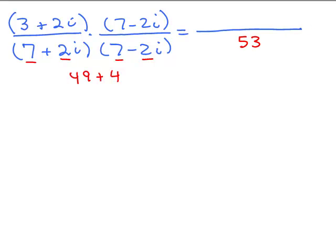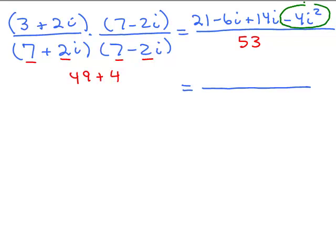Now the numerator, you have to do the FOIL method. 3 times 7 is 21, the outer term will be minus 6i, the inner term will be plus 14i, and the last term will be minus 4i squared. Minus 4i squared, or those of you who want can just write plus 4, that's going to change to plus 4. So now looking in the numerator, we need to add the real parts. So remember this last part, this minus 4i squared is going to end up being a plus 4, so I'll get to add that to the 21. So I have 21 plus 4 is 25, and then for my imaginary parts, I have negative 6i plus 14i, that'll be plus 8i over 53.